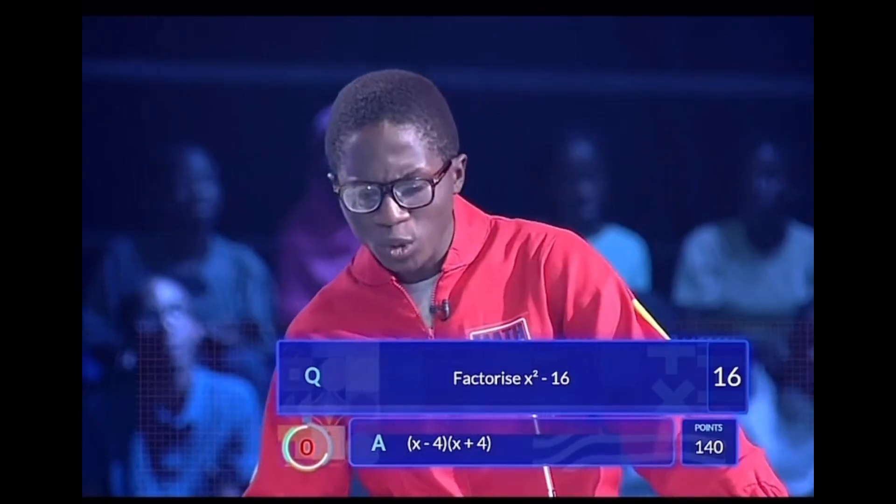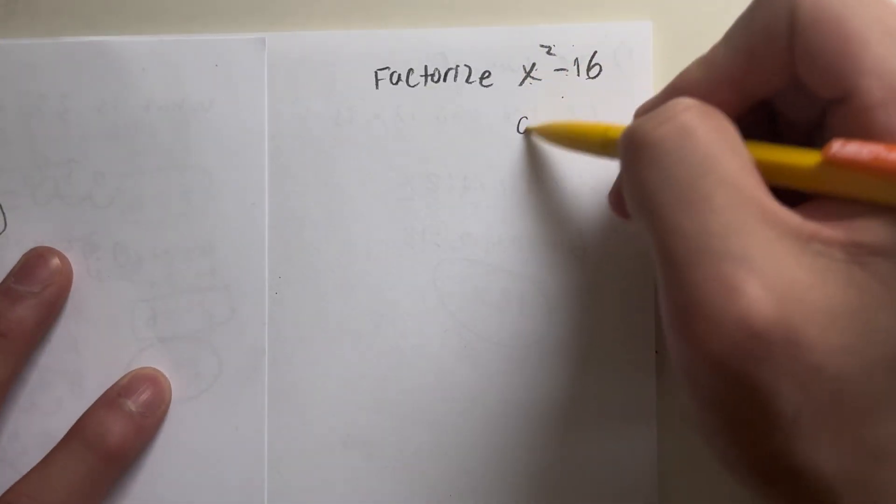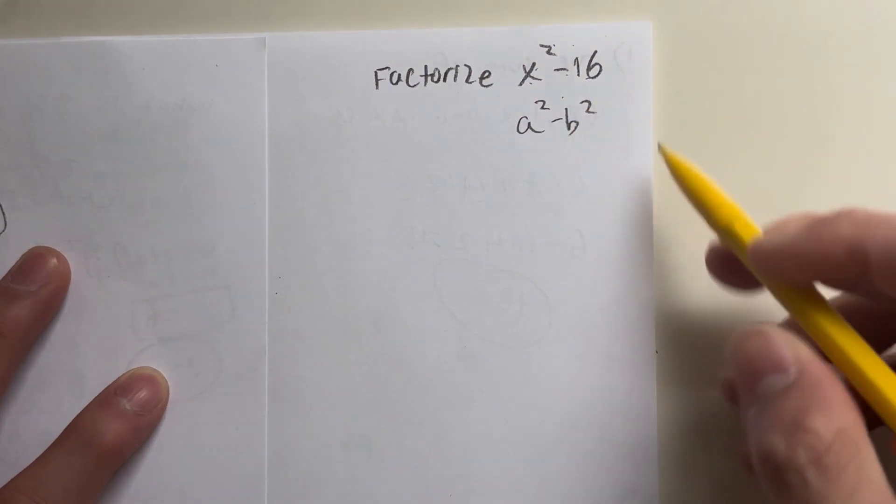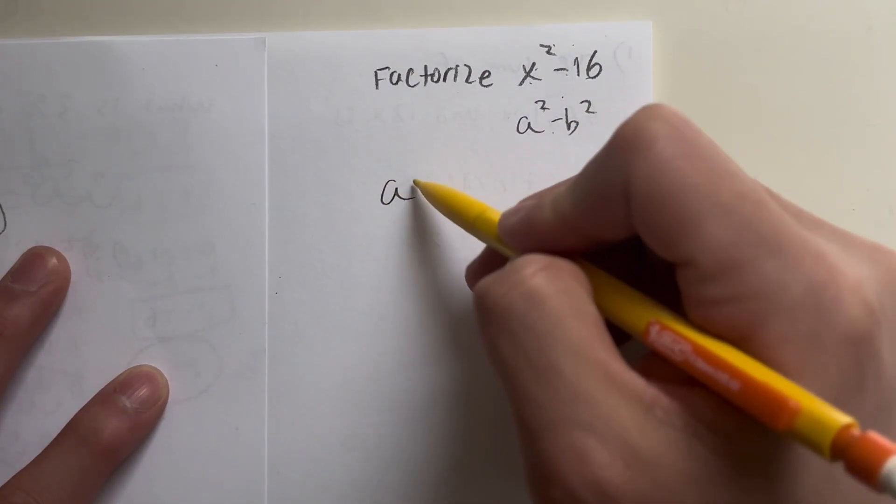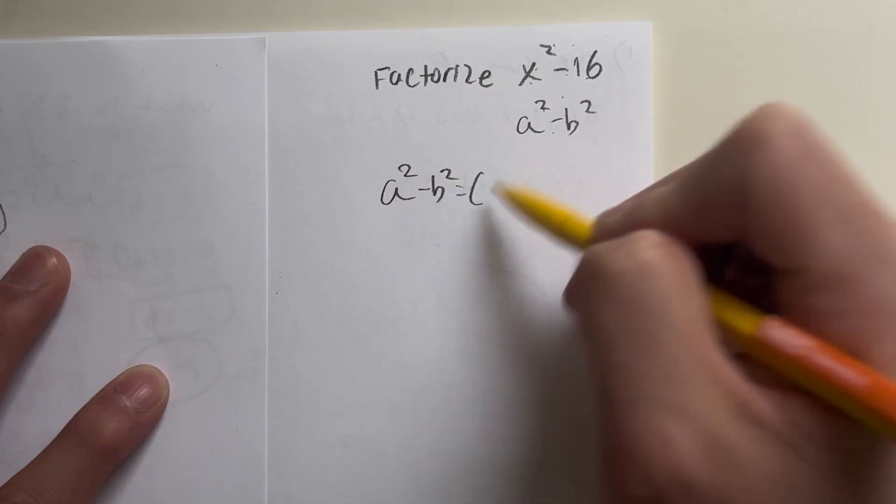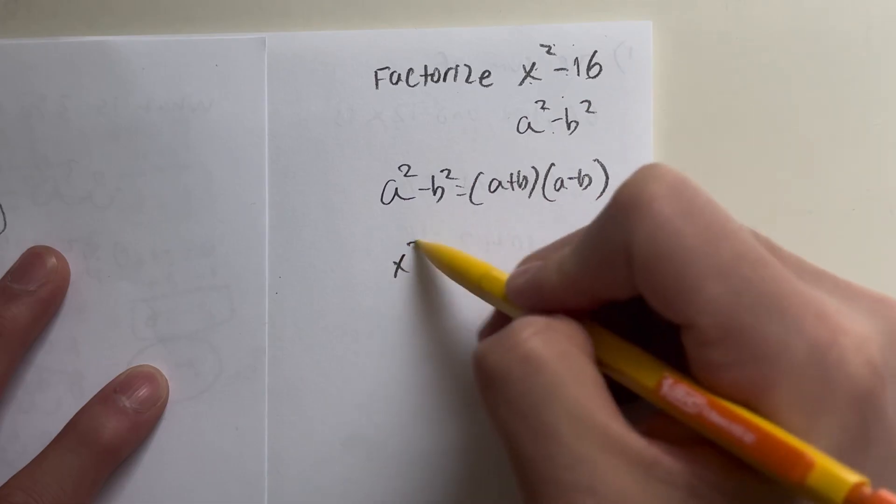Factorize x squared minus 16. Correct. Hold up, we literally saw this question two minutes ago. This looks very familiar, right? Because x squared minus 16, same thing as before, that's just equal to a squared minus b squared. If you go back a couple of questions, what does a squared minus b squared equal to? That equals to a plus b times a minus b.